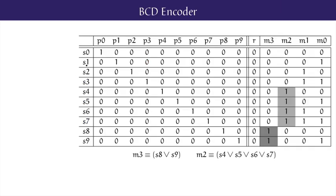Equipped with these intermediate signals S0, S1 up to S9, we can set about determining a logic formula to characterise each of the four output bits M3, M2, M1 and M0. Starting with the highest order bit M3, we want to characterise when M3 is true, when it has value 1. Looking at the table down the column for M3, we can see that M3 is 1 exactly when combination S8 is true or combination S9 is true, meaning keypad buttons 8 or 9 have been cleanly pressed. So we conclude that M3 if and only if S8 or S9.